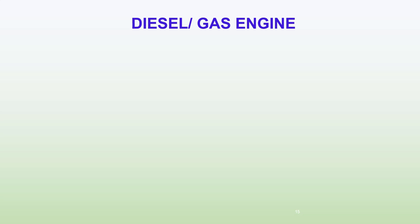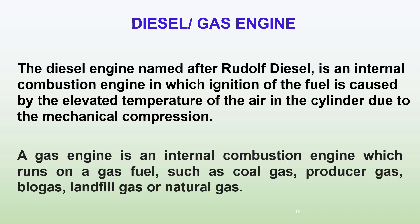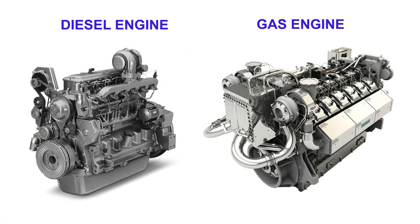Diesel and gas engine. A diesel engine is an internal combustion engine in which ignition of the fuel is caused by the elevated temperature of the air in the cylinder due to mechanical compression. A gas engine is an internal combustion engine which runs on a gas fuel such as coal gas, producer gas, biogas, plant fuel gas, or natural gas.